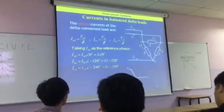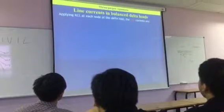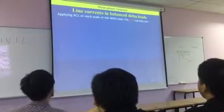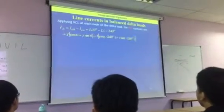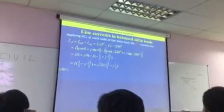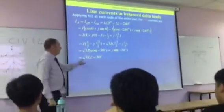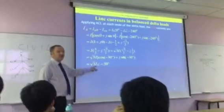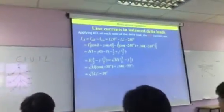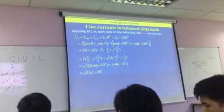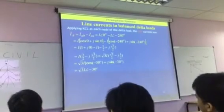What we find is that there's our initial current, and again, applying Kirchhoff's circuit load at each node of the delta load, we find the currents become basically root 3 times the original current. So the voltages, the line voltages are the same. It's the line currents that are increased by a factor of root 3.